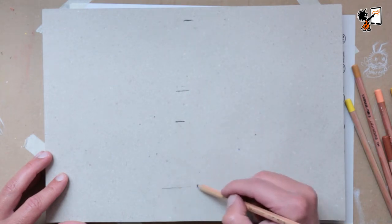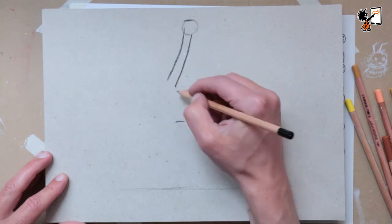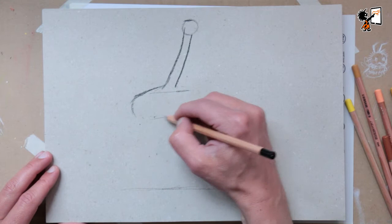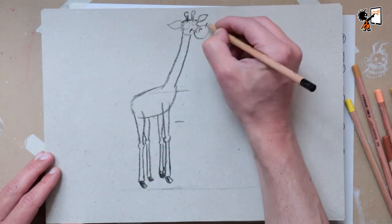If you draw a giraffe, first measure how long the neck will be and the legs, and draw in guidelines. In this way, you can draw your entire character on your piece of paper.